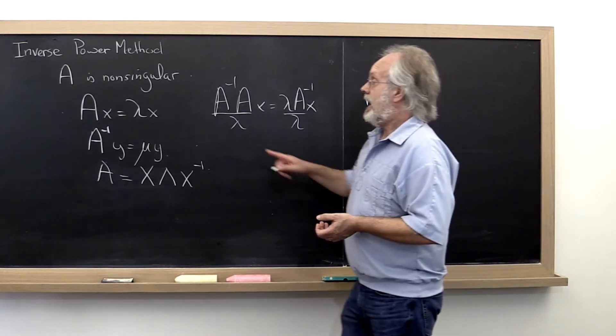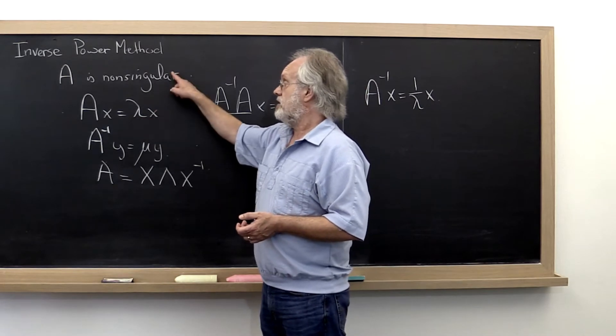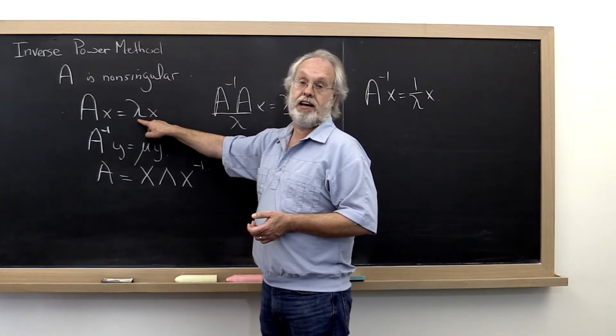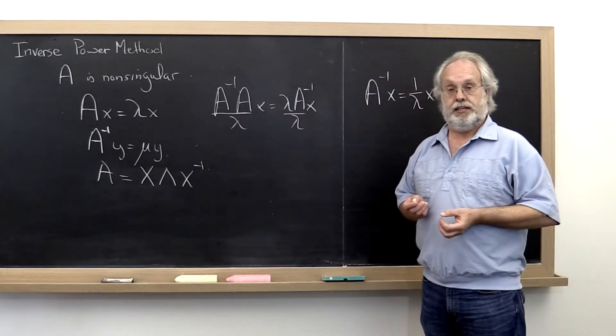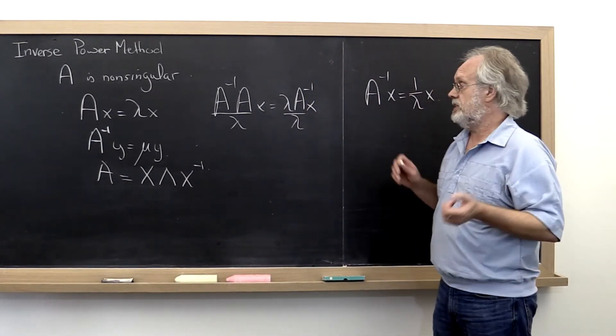And obviously lambda cannot be zero. But if A is non-singular, then we know that none of its eigenvalues are zero. And therefore we know that 1 over lambda is well-defined. Okay, so that's the easy part.